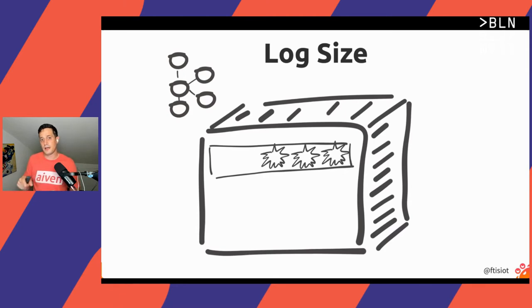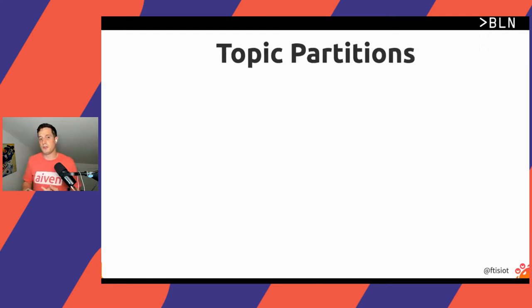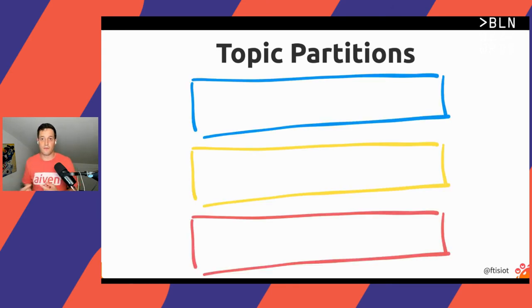Luckily, Kafka doesn't really impose this trade-off between topic size and disk size, because it has the concept of topic partitions. A topic partition is a way of dividing the events of the same type — belonging to the same topic — into subtopics. Going back to the pizza orders analogy, I could divide pizza order events into different partitions depending, for example, on the restaurant receiving the order.